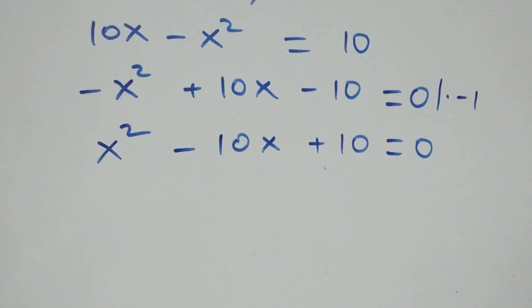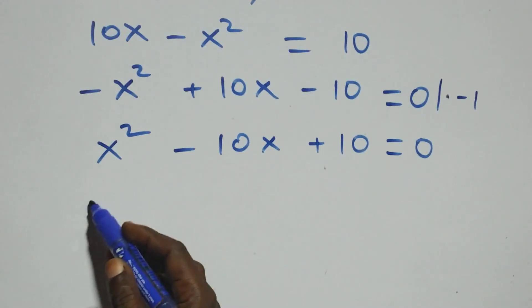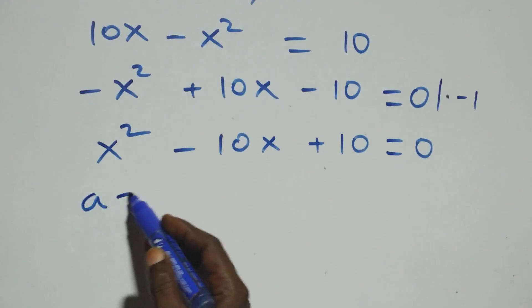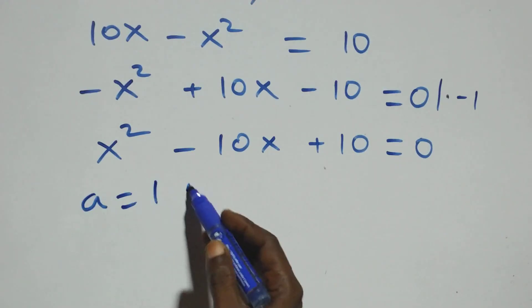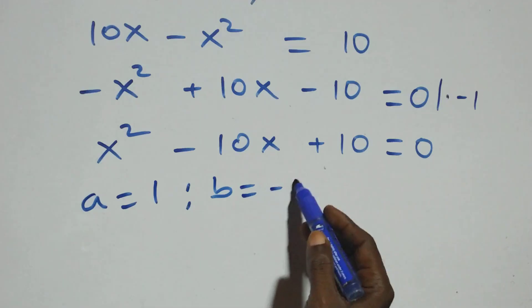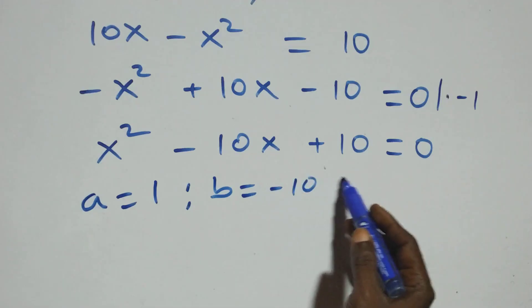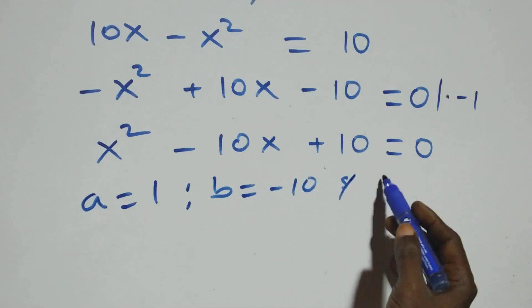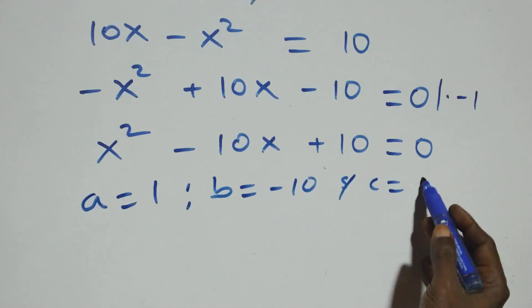Here we have a quadratic equation, where a equals 1, b equals minus 10, and c equals 10.